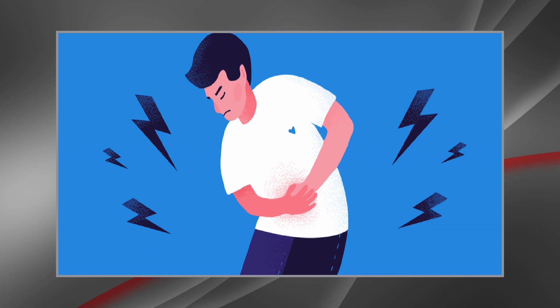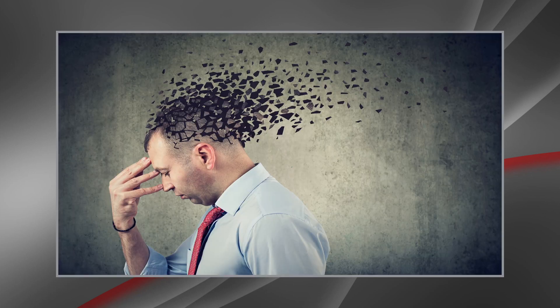Third is harmful drinking, which refers to alcohol consumption that results in physical or psychological harm to the individual or society. Fourth is hazardous drinking, which refers to a quantity or pattern of alcohol consumption that places individuals at risk for adverse health events. Fifth is alcohol dependence, defined as a cluster of behavioral, cognitive and physiological phenomena that develop after repeated alcohol use, typically including a strong desire to consume alcohol, difficulties in controlling its use, persisting in its use despite harmful consequences, higher priority given to alcohol use than other activities, increased tolerance, and sometimes a physiological withdrawal state.